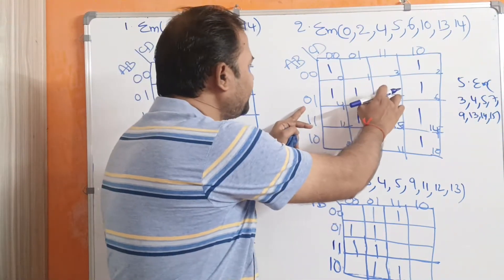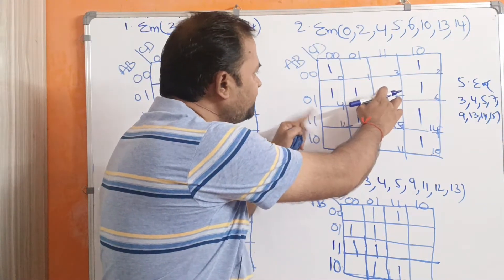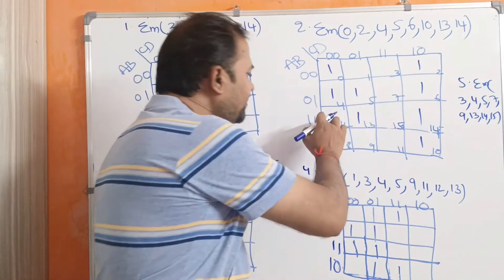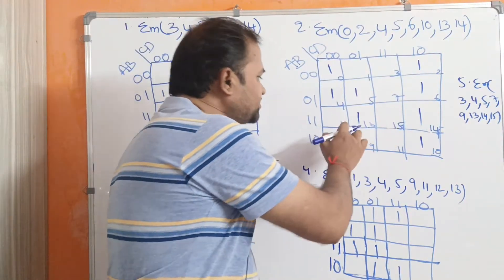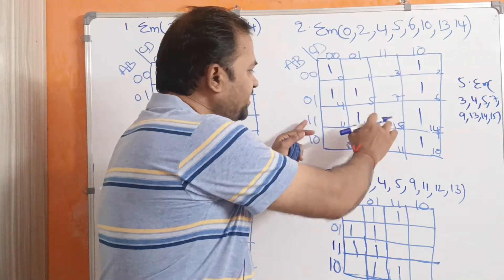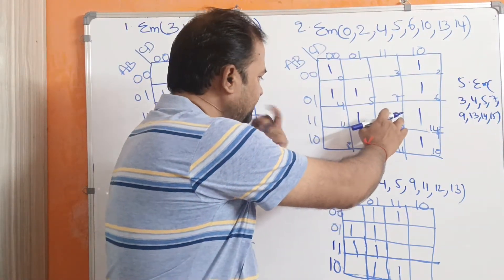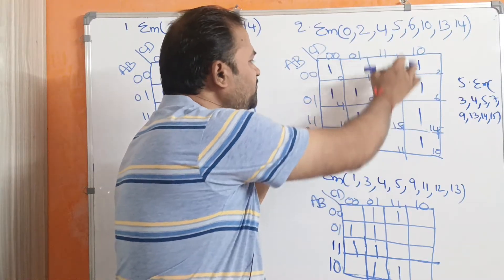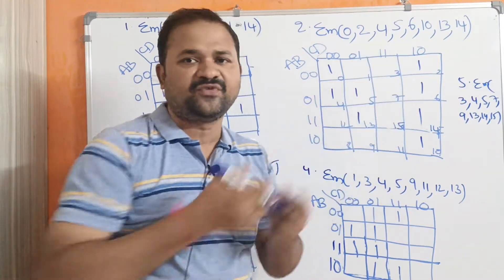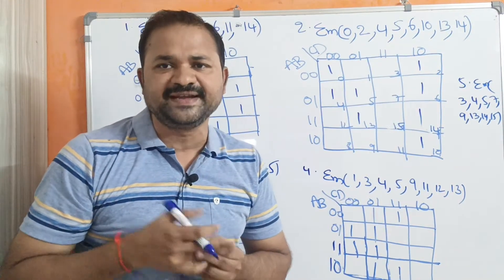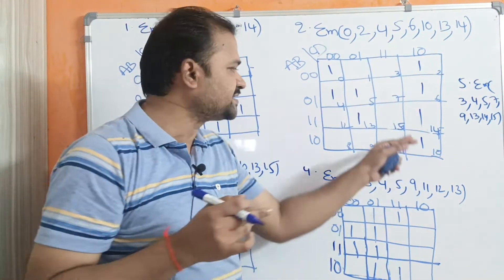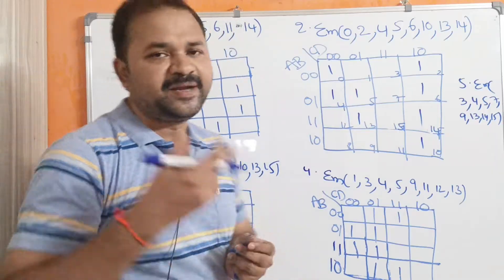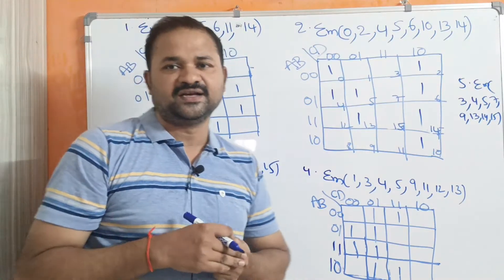Likewise, if we observe another row and observe a cell that represents 1,1,1,1 — in decimal notation that is 15 — so this cell represents minterm 15. Now let us solve the problems.